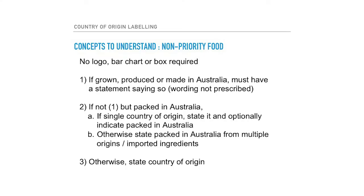If you are a non-priority food, you do not need the logo, bar chart, or box, but you still do need a statement. If it's grown, produced, or made in Australia, bear in mind how those words are now used, and then have a statement saying so. So if you have an alcoholic beverage made in Australia with an imported additive, you do not need the logo, bar chart, or box, but you still need a statement — and that statement must largely be 'made in Australia,' because it's not 'product of' since it contains imported ingredients or additives.